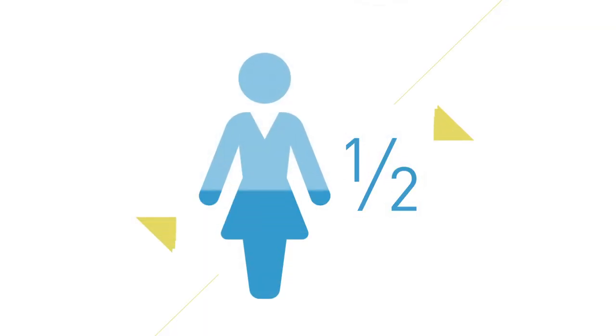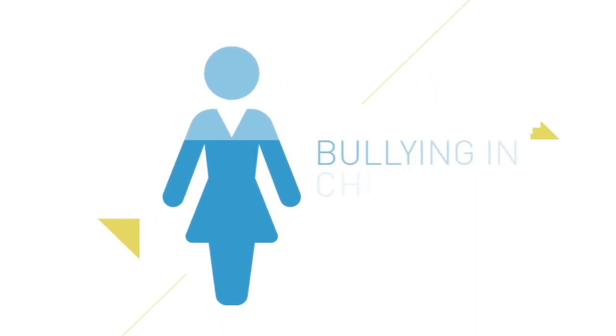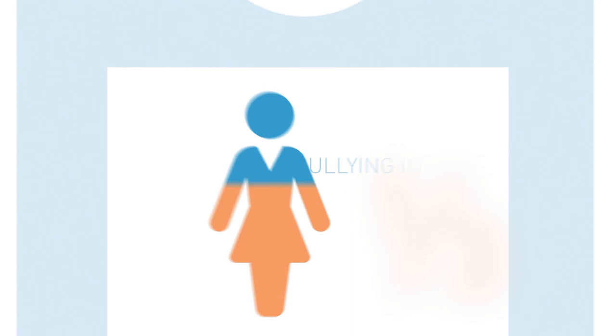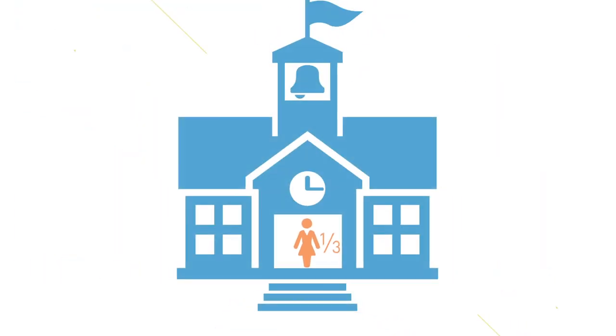According to surveys, between half and two-thirds of LGBT youth experience bullying in childhood, forcing one in three to skip or even drop out of school.